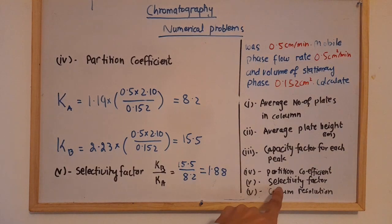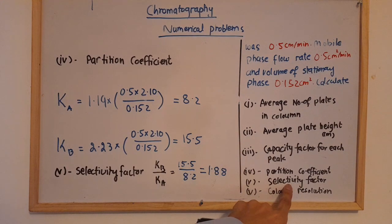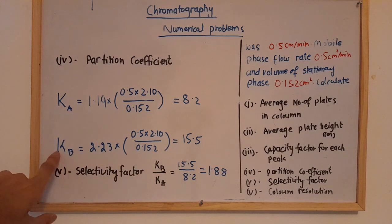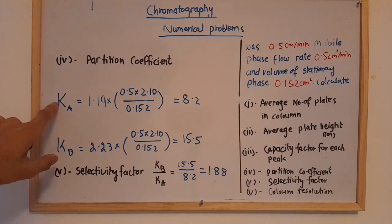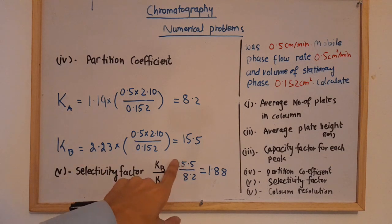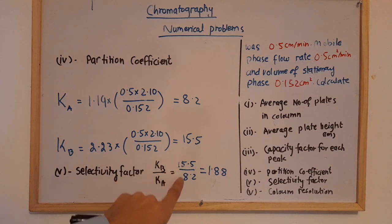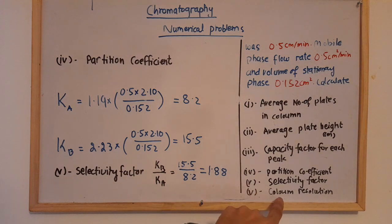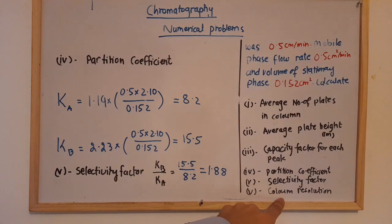For the selectivity factor, simply divide kb by ka: 15.5 ÷ 8.2 = 1.88.